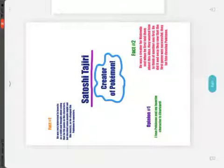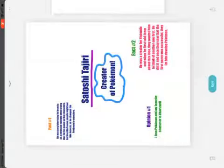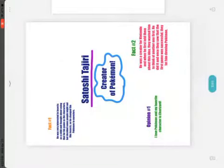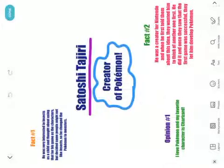Also put an opinion — you can put some opinions in there too. Opinion number one: I love Pokemon and my favorite character is Charizard. So I'm just going to show you the things. I have all that, and you can change your writing. Down at the very bottom I have my uppercase A and my lowercase A.